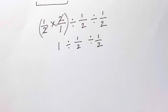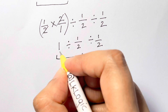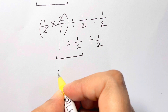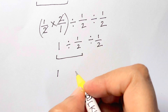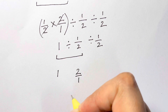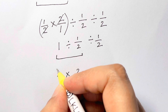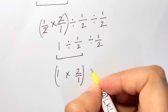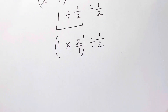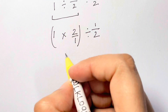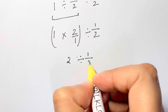Now we solve the left-hand side first again: 1 divided by 1 over 2. Keep the first fraction, flip the second fraction to 2 over 1, and change the sign from division to multiplication. So you have 1 times 2 over 1, and then still divided by the remaining 1 over 2. That gives 2 over 1, divided by 1 over 2.